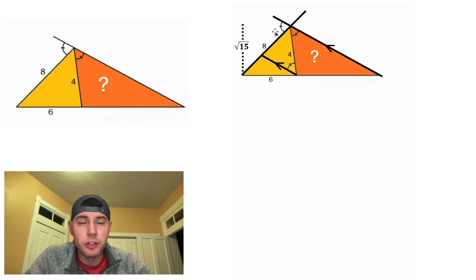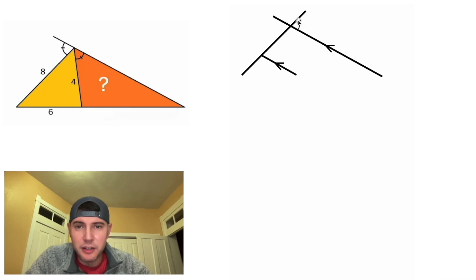These two angles are called vertical angles, and they are also congruent. And then this angle and this angle are called corresponding angles. Since these are parallel, these corresponding angles are going to be congruent to each other. Now we can focus on this triangle right here.